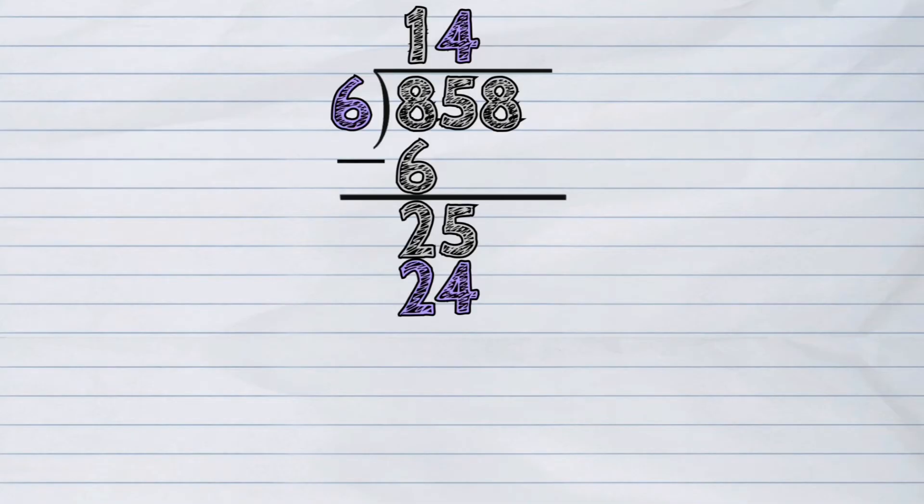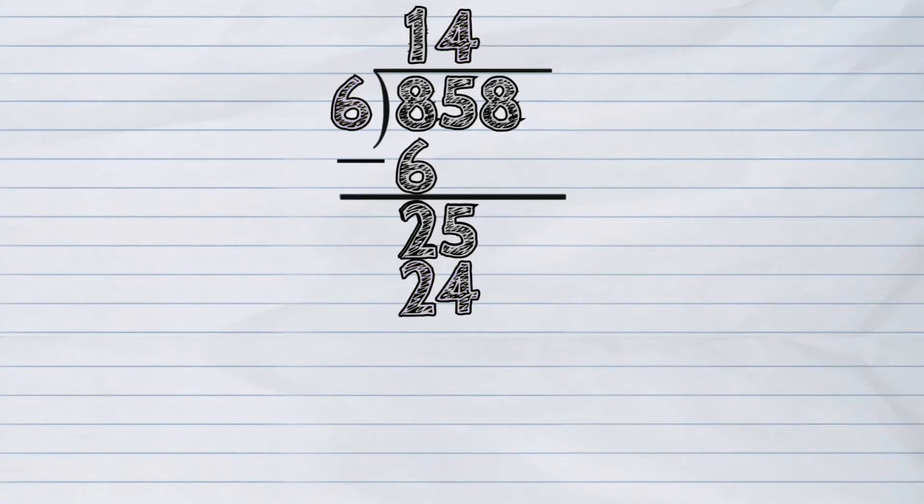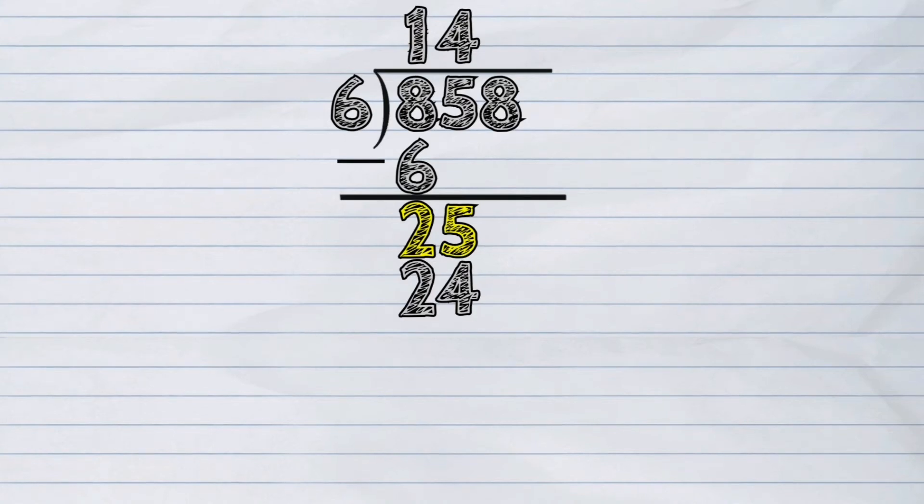Again, we will do the subtraction. Twenty-five minus twenty-four, the answer is one. And then we bring down the next number from the dividend, which is eight ones, making the number eighteen.